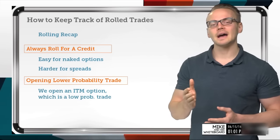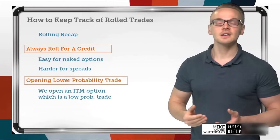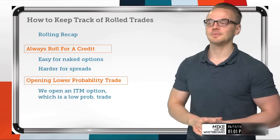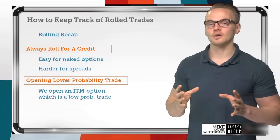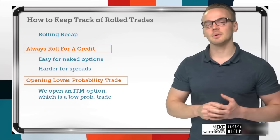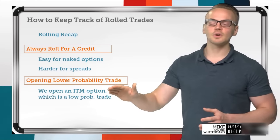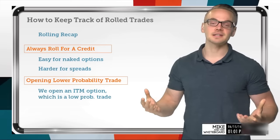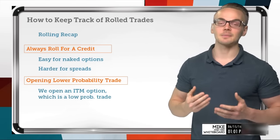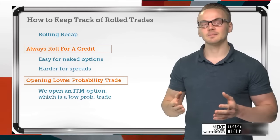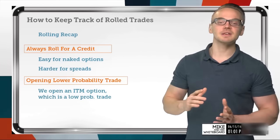I did do a whiteboard on why it's hard to roll credit spreads for a credit, so if you missed that one definitely check it out. What we really want to keep in mind is that when we roll, we're keeping the dream alive but we're opening a lower probability trade because we're rolling defensively. If I'm selling an option and it's in the money, that's a lower probability trade because we want our options to be out of the money.